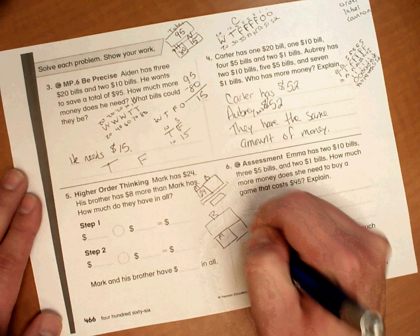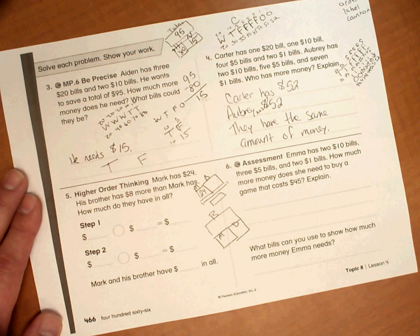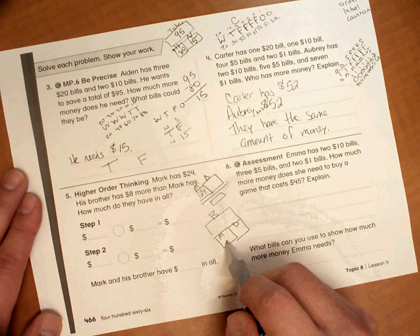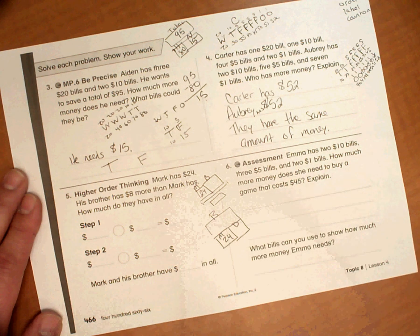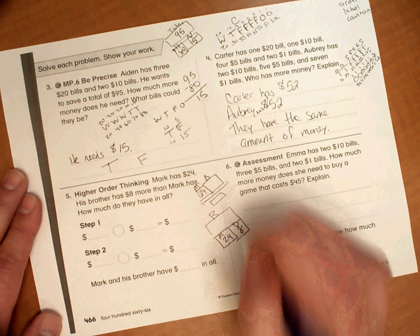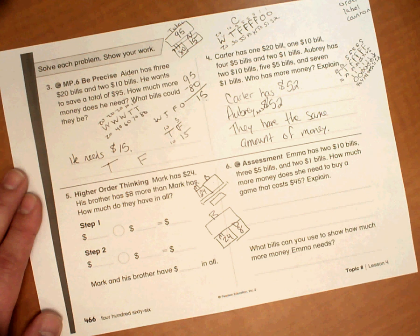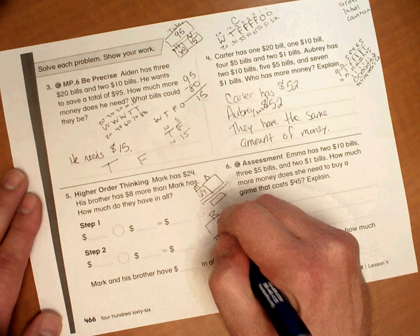This is Mark. And this is the difference between the two. So Mark has $24. His brother has $8 more than Mark does. So we don't know what his brother has.